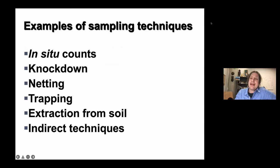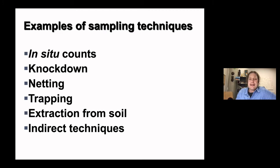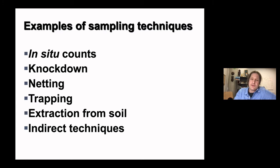This is kind of basic entomology — what I teach our undergraduates and graduate students here at Iowa State. There are six general sampling techniques: visual inspection of the plant, knockdown where you beat the plant and catch what falls, netting with a butterfly net, trapping using some kind of baited trap, soil extraction for critters living in the ground, and indirect techniques where we look for evidence such as herbivore damage to plants.